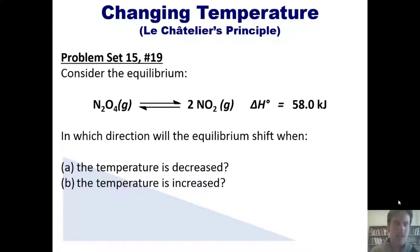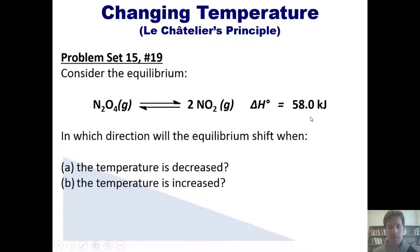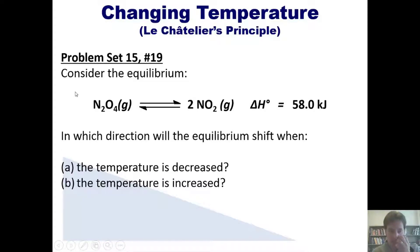Here's the answer. In this equilibrium reaction as written, the delta H is positive — it's an endothermic reaction. That means we treat heat as a reactant and write heat on the left side of the equation. Then we treat everything the way we would if we were changing concentrations.